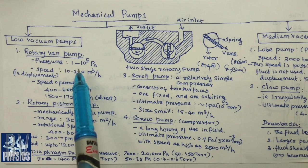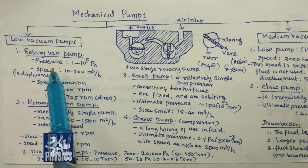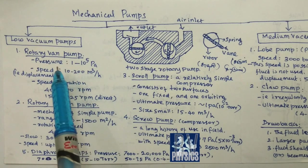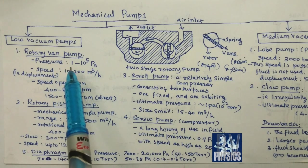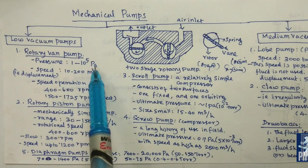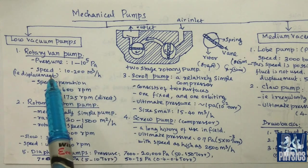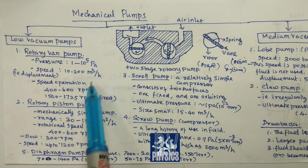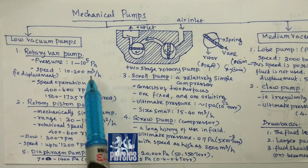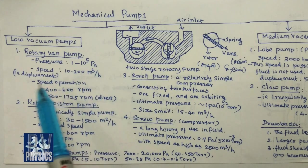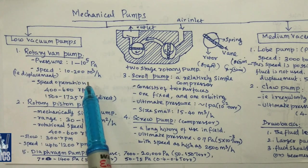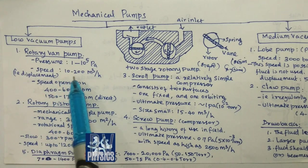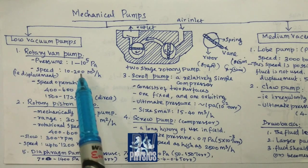We have one pressure range. For the rotary vane pump, the pressure range is 1 to 10 to the power 5 Pascal. The speed is 10 to 20 cubic meters per hour. The cubic meter is the volume — we are talking about the volume of gas displaced in a container.